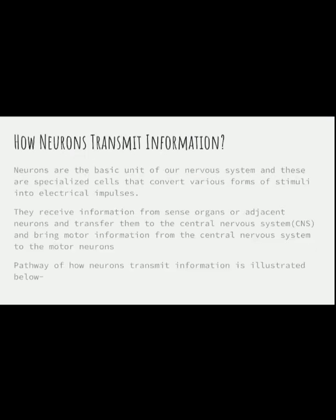The first topic is how neurons transmit information and basically what a neuron is. Neurons are the basic units of our nervous system. They are specialized cells that convert various forms of stimuli into electrical impulses. They receive information from sense organs or adjacent neurons and transfer them to the central nervous system, and also bring motor information from the CNS to the motor neurons. Their pathway goes from dendrites to soma and then to axons and then the terminal buttons.